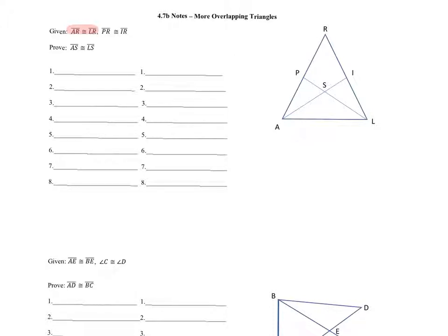I color-coded them for you, which is probably a little more helpful. But you're going to have to train your brain to see this. Those are sides in which two triangles? What would the blue triangle be? Can you name that?